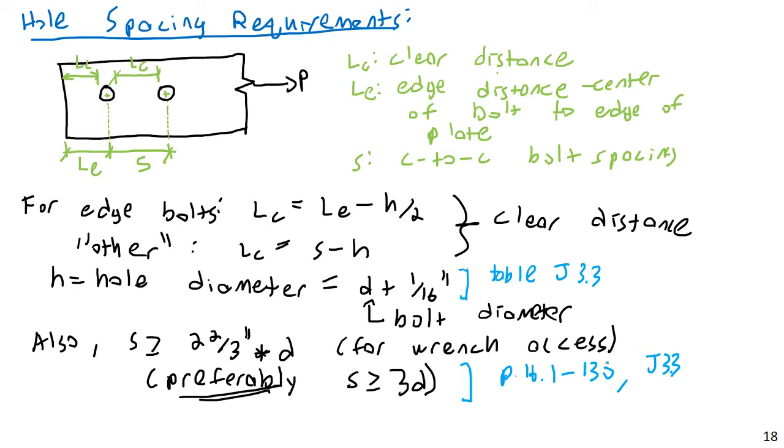Then we also have a comment on what else we need to describe. We have Table J 3.4 for minimum edge distances. Table J 3.4. And this is described in section 4, but then it references Table J 3.4.